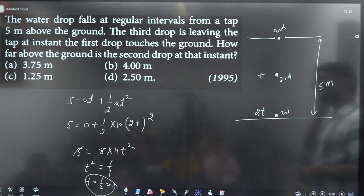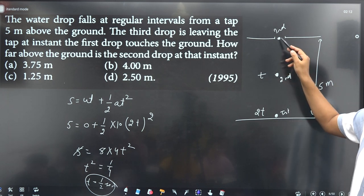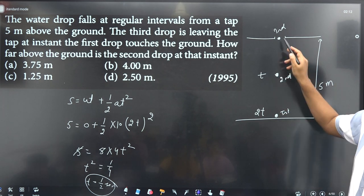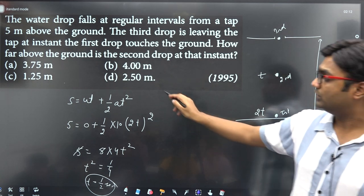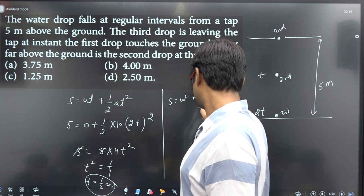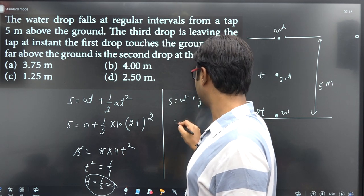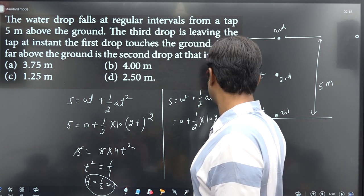So the time is 1 second. The second drop travels for a different time interval. Using the second equation again: s = ut + 1/2 at², where u = 0, a = 10, and time is 1/2 second.